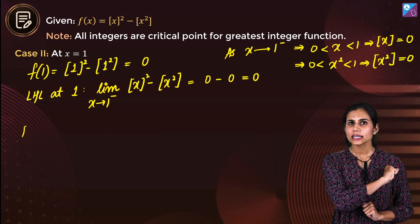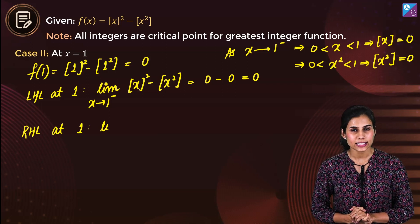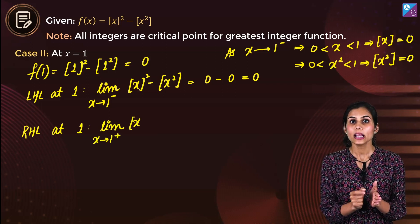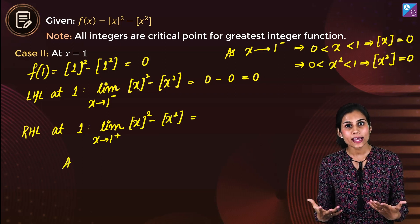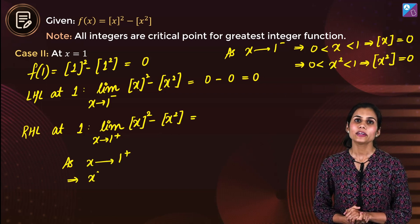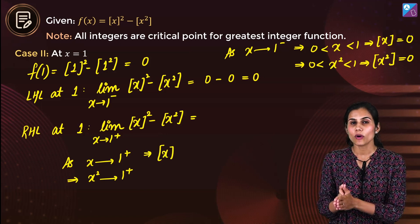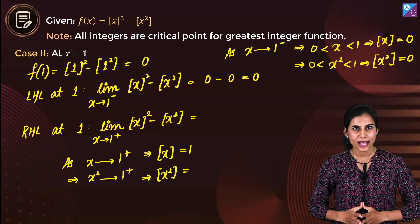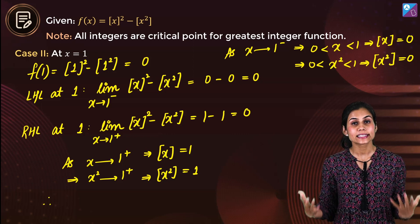What about the right hand limit? If x approaches 1 from the right, x is very close to 1 but to the right of 1. This implies x² is also very close to 1 and greater than 1. So GIF(x) = 1 and GIF(x²) = 1. Therefore the right hand limit comes out to be 1 − 1, which is again 0.